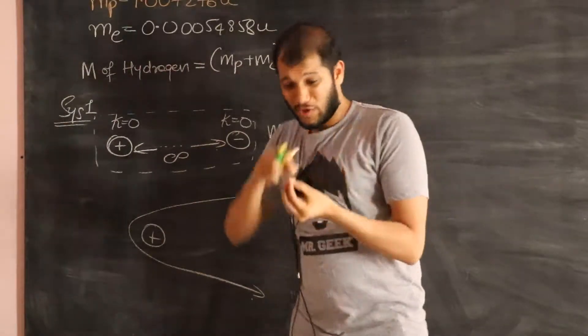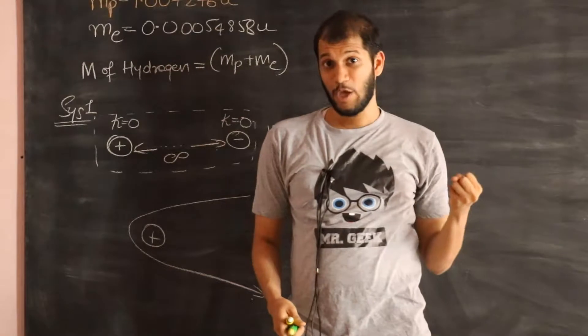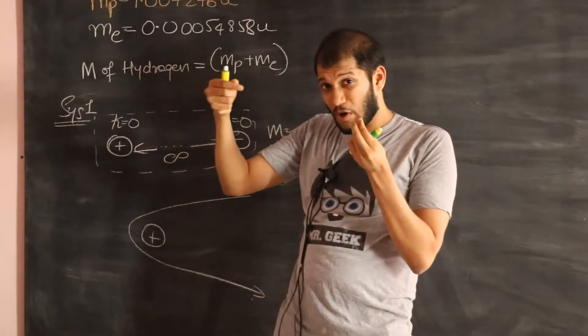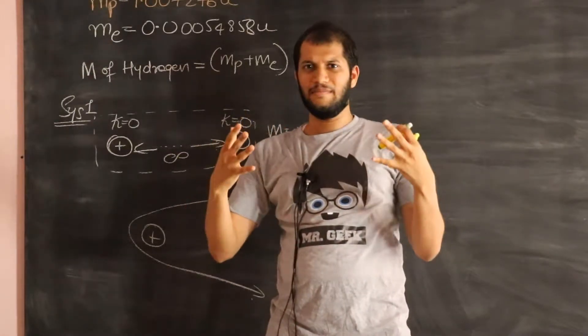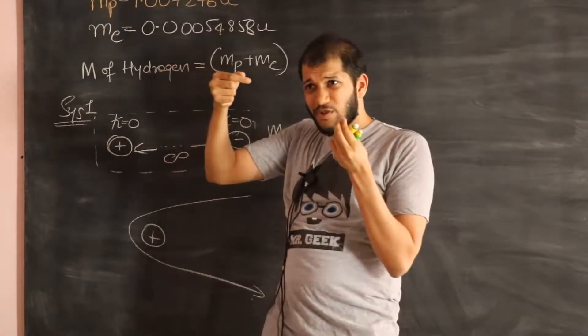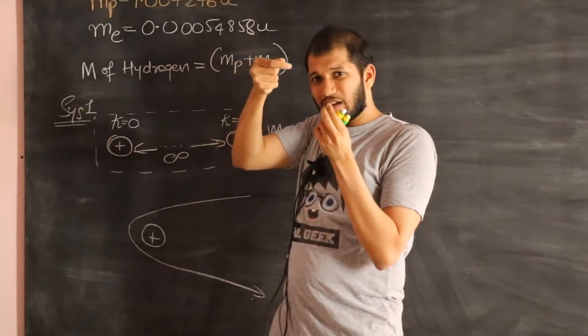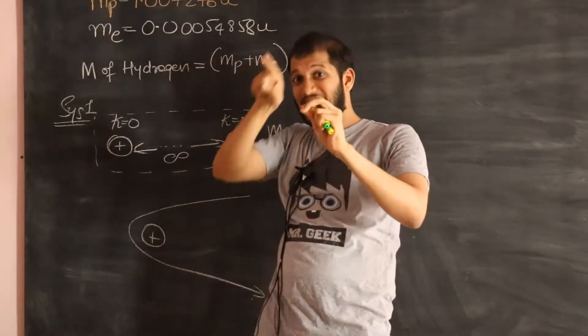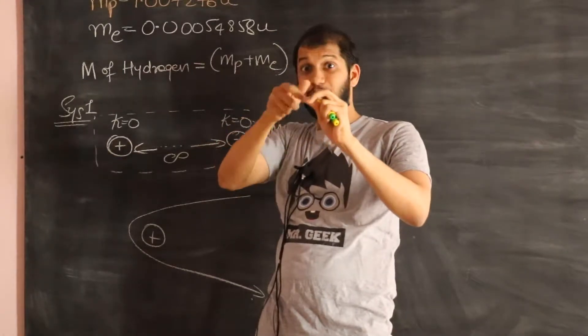In order for the proton to capture the electron, we need to remove some energy from the system. So what we need to do now is when the electron is coming close to the proton, maybe we can put some resistive forces. Maybe we can put some medium. So some resistive forces, so we can remove some of the energy from the electron. And so the electron slows down. And if the electron slows down enough, then it can orbit the atom, the proton.